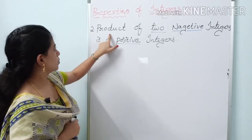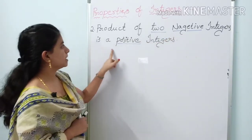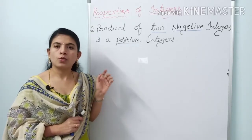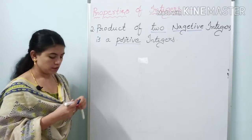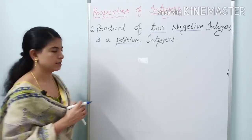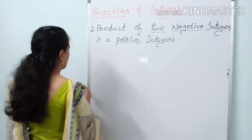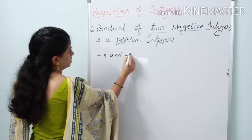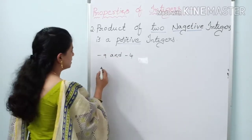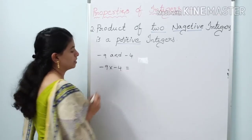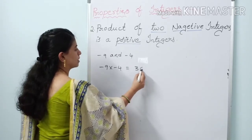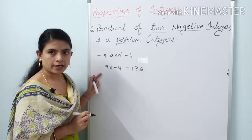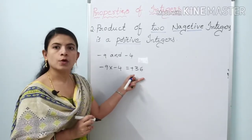Second property: the product of two negative integers is a positive integer. Let us take two negative integers — minus 9 and minus 4. Applying multiplication: minus 9 into minus 4 equals 36. Minus into minus gives plus. So the product of two negative integers is a positive integer.